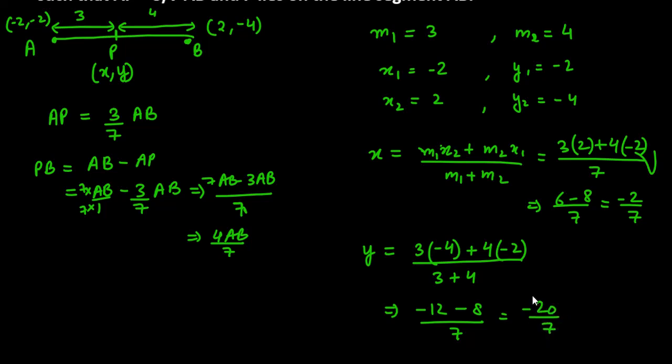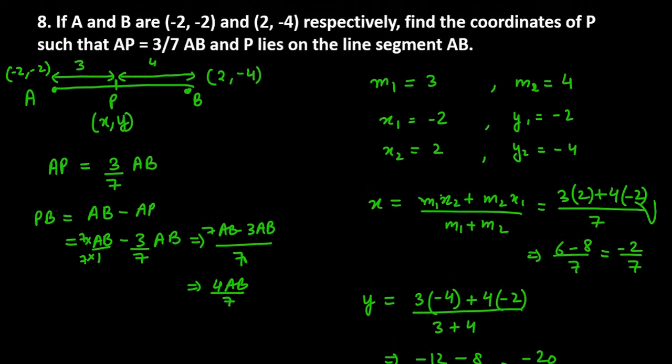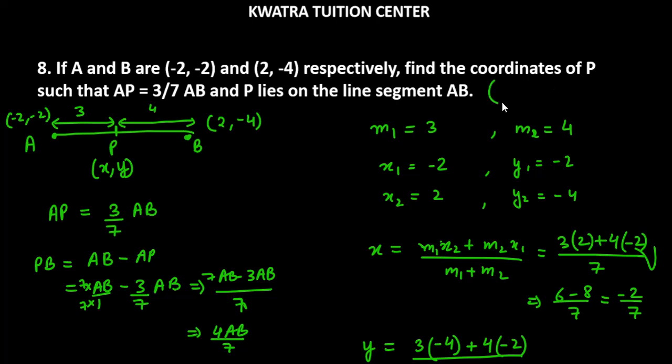So we have the coordinates of point P and it is -2/7 and -20 over 7. Sorry, -2 over 7 and -20 over 7. So this is the coordinate of point P.